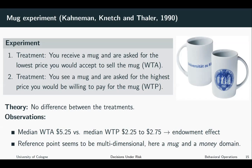The experiment also suggests that the reference point seems to be multi-dimensional — here we have a Mug domain and a money domain. In the Mug domain, potential sellers would lose the Mug and in return gain in the money domain. In contrast, potential buyers would gain in the Mug domain and lose in the money domain.